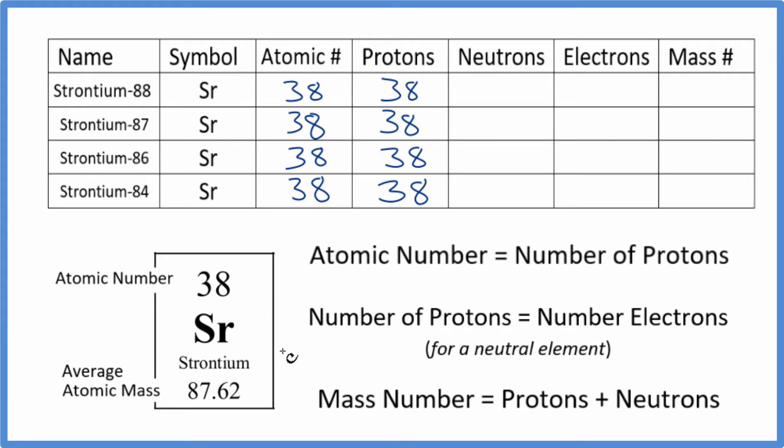And in a neutral element, like strontium here on the periodic table, number of protons equals the number of electrons. So we can just put 38 in here for all of the electrons for strontium.